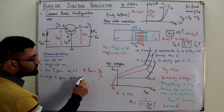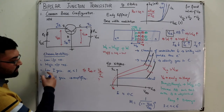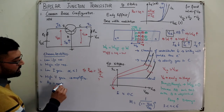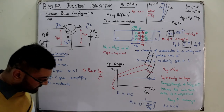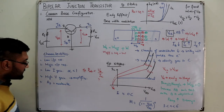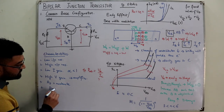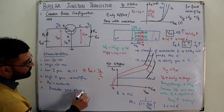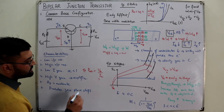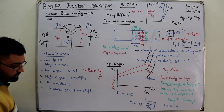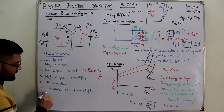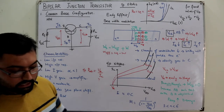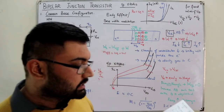Fifth, because of low current gain and high voltage gain, the power gain AP is moderate. Sixth, it provides zero phase shift — meaning if the input is a sinusoid, the output is the same sinusoid with no phase change. And seventh, it has a larger bandwidth — meaning it can amplify a wider range of frequencies.